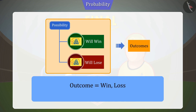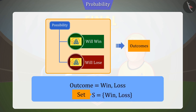For example, here winning or losing of Chennai Super Kings will be the two outcomes of the match. If we collect all the outcomes of an experiment, then it becomes a set. In probability, a group of all possible outcomes of an experiment is called sample space.